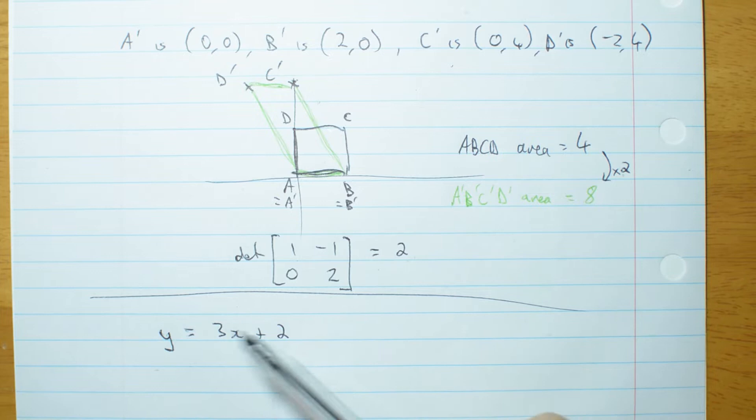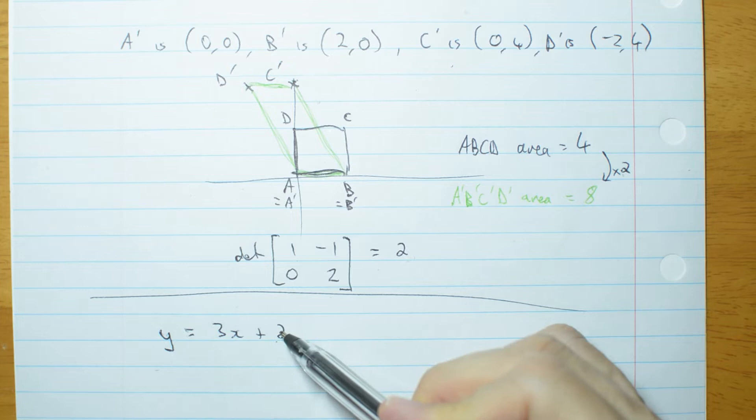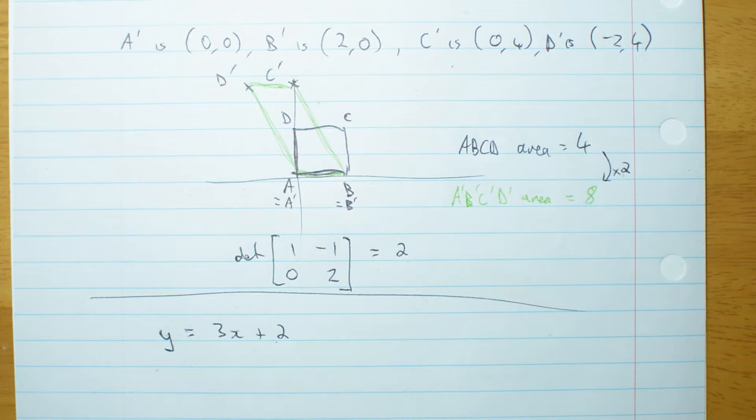Suppose I take this line and I want to do the same transformation to this line. What's the new equation of the image of this line under that transformation?